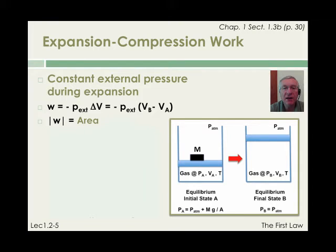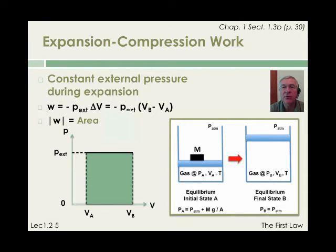To see this more clearly, we can plot the external pressure on the vertical axis as the function of the volume of the substance on the horizontal axis. Note that during the expansion, the external pressure is constant since it remains equal to the atmospheric pressure.